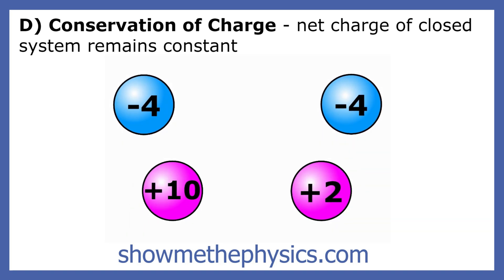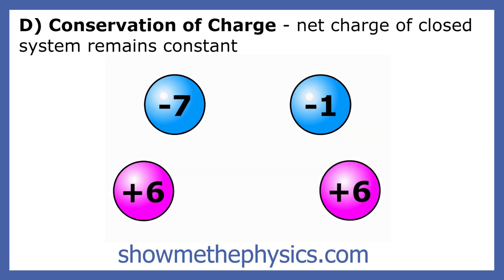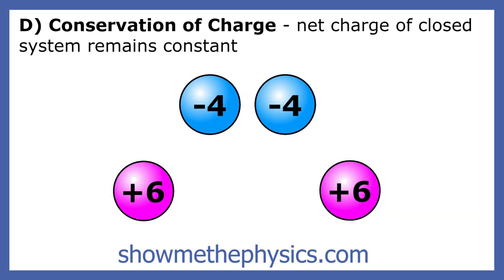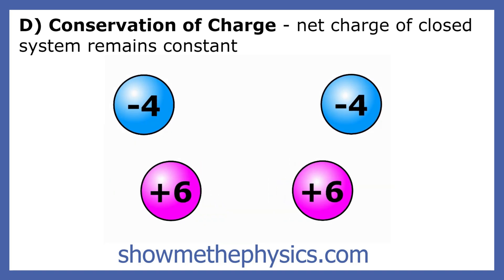When the blue charge is touched, the total charge before and after they come into contact is negative 8. Electrons always move from the more negative sphere and travel to the less negative sphere. Charges stop flowing when the two charges are equal.